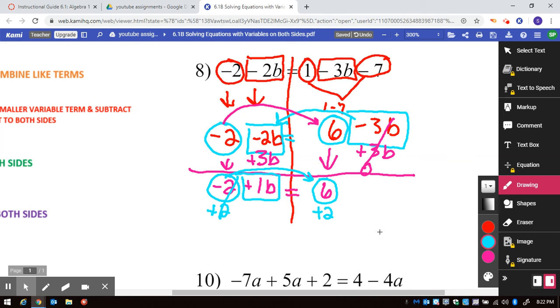These cancel out, and that leaves me over here with 1B is equal to 8. And that's the final answer.